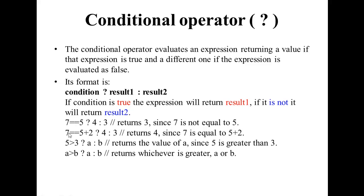For example, consider 7 equals 5. What is this? It is the condition. The conditional operator comes in here. This condition is false, since 7 is not equal to 5.